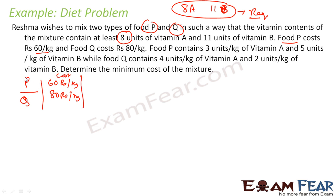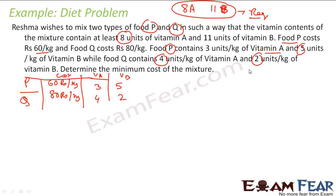Food P contains 3 units of vitamin A and 5 units of vitamin B per kg. Food Q contains 4 units of vitamin A and 2 units of vitamin B per kg. We have to find the minimum cost of the mixture. Let's suppose Reshma takes x kg of food P and y kg of food Q.